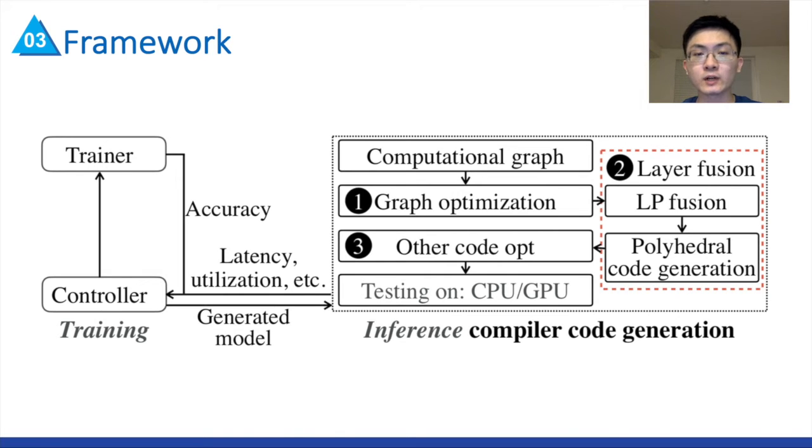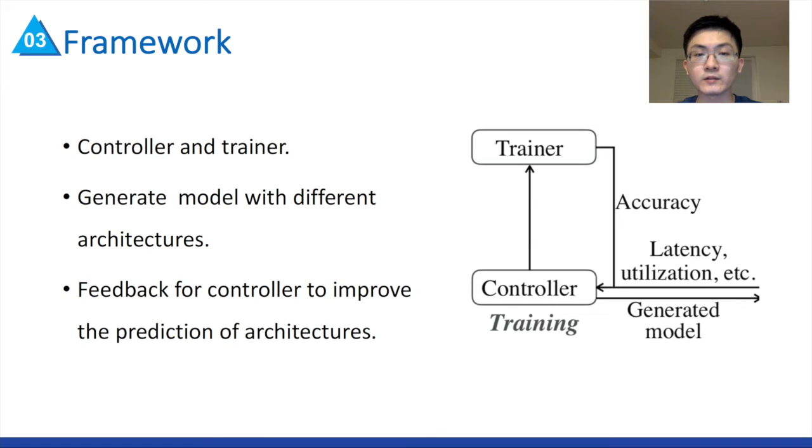After the compiler-aware neural architecture search, the generated codes by our optimized compiler will be deployed for mobile CPU and GPU executions. For the training process, the controller generates the architectural hyperparameters of neural network. This includes two phases.